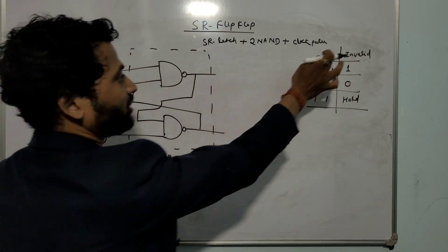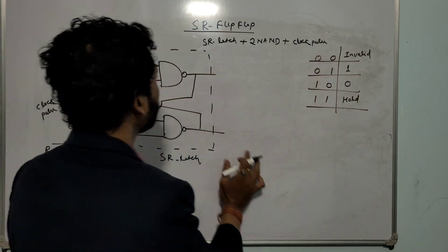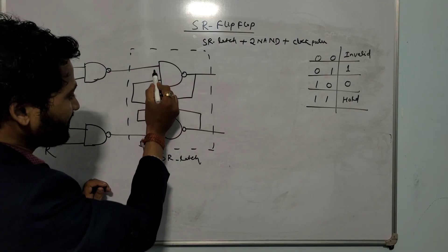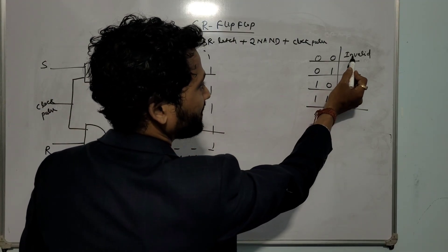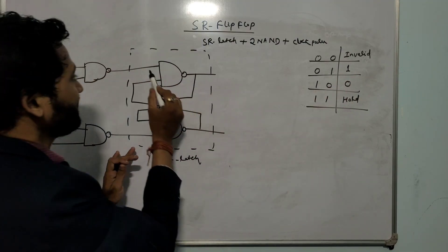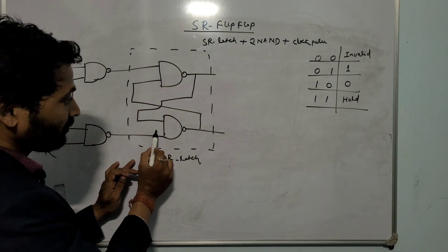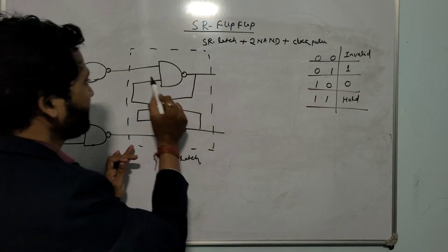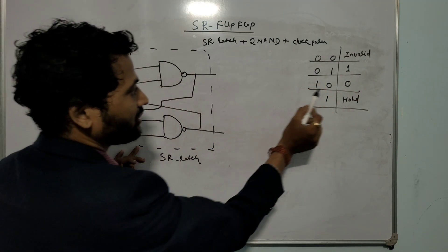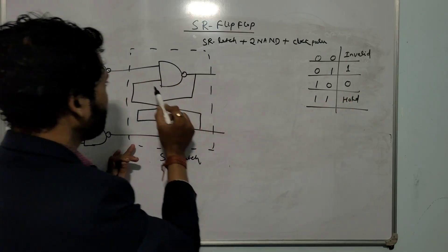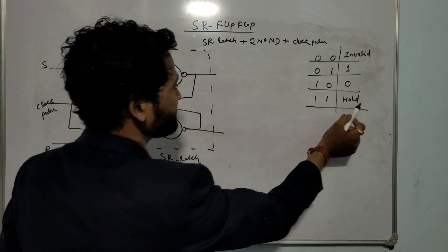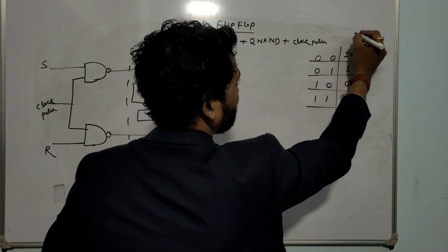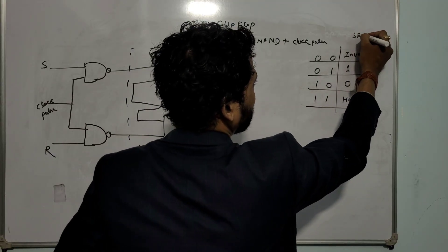The SR latch outputs: if input is 0, 0 — output is invalid. If input is 0, 1 — output is 1. If input is 1, 0 — output is 0. If input is 1 and 1 — output is hold.